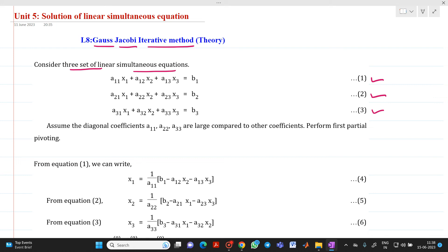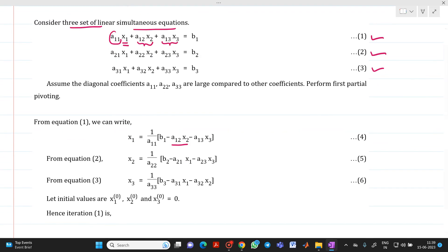From the first equation, I am going to write the equation for x1. We start with b1. If I shift a12x2 to the right side, it will be minus a12x2. If I shift a13x3 to the right side, we will get minus a13x3. The coefficient of x1 is a11. If we shift it to the right-hand side, we will get 1 upon a11. So from equation 1, we will get the equation for x1.